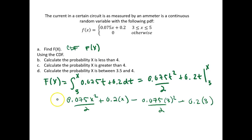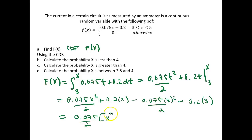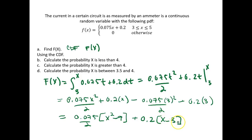So if I simplify this — this is now the CDF — I get 0.075 over 2 times (x squared minus 9), since 3 squared is 9, plus 0.2 times (x minus 3). This is my cumulative density function.